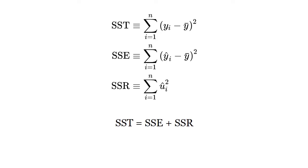SSR could also be written as summation of (û_i minus ū) squared, but since the mean of the residual is zero, we are left with summation of û_i squared. And SST equals SSE plus SSR.